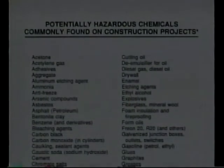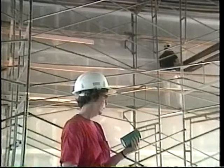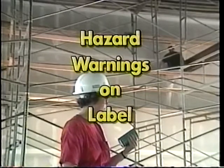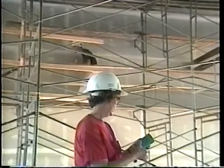A partial list of hazardous chemicals commonly found on construction sites is included in the package that accompanies this videotape. Hazardous chemicals will have labels with some hazard warnings put on them by the chemical manufacturer. Be sure to check the labels on materials you purchase. Trade associations, labor unions, and local or regional committees concerned with occupational safety and health can give you more help at identifying the hazardous chemicals on your job site.